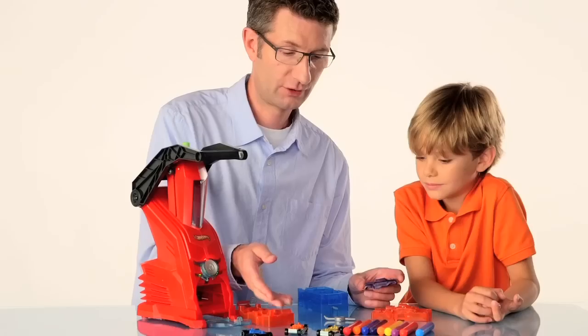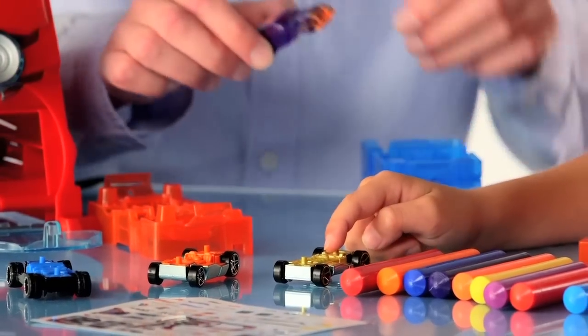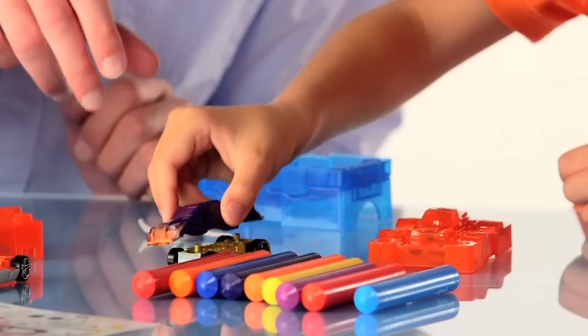Now we have to select a chassis. Which one would you like? The gold one. Okay. So you take the body and place it right on top.